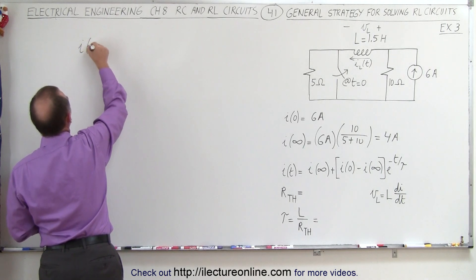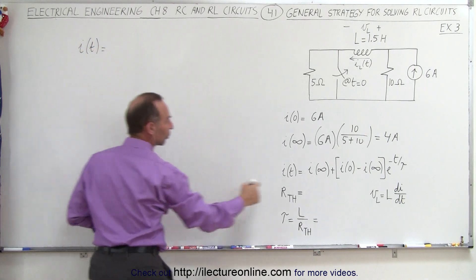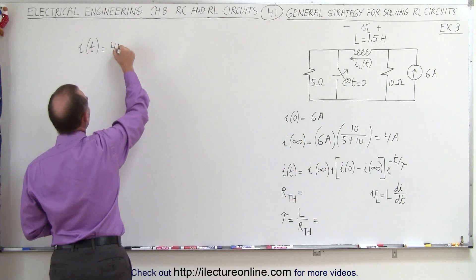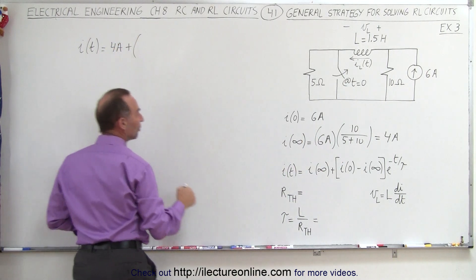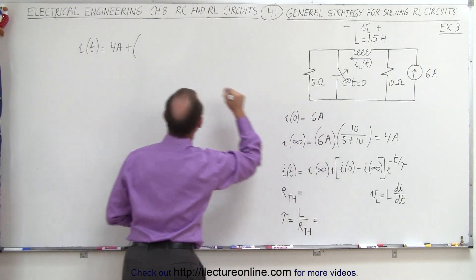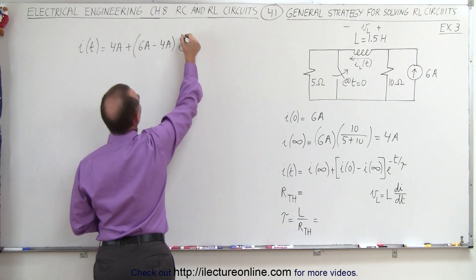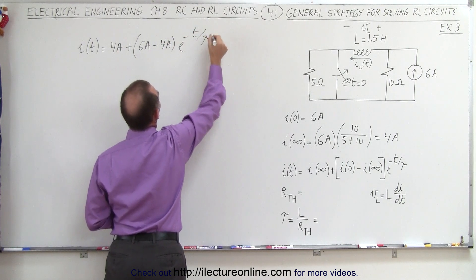So we can say that the current as a function of time is equal to the current at infinity which we determine to be 4 amps plus the difference between the current initially which is 6 amps minus the current at infinity which is 4 amps times e to the minus t over tau.